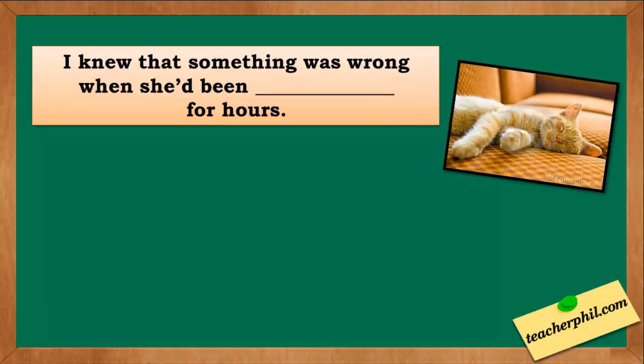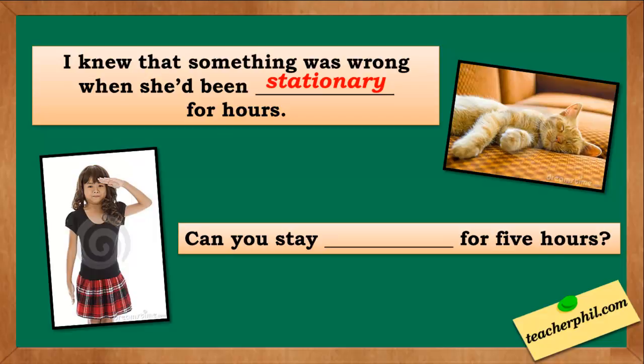The fifth one: I knew that something was wrong when she'd been blank for hours. The correct answer is stationary with an A, which means unmoving. I knew that something was wrong when she'd been stationary for hours. The last one: can you stay blank for 5 hours? The correct answer is stationary with an A. Can you stay stationary for 5 hours?